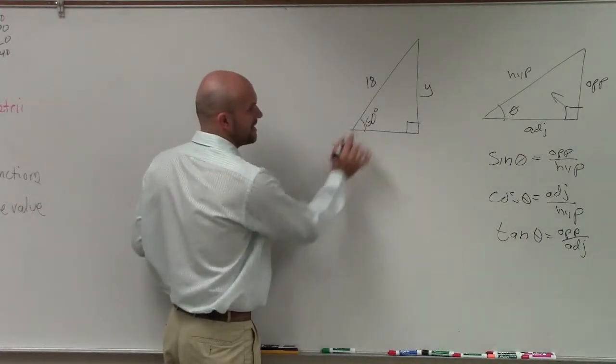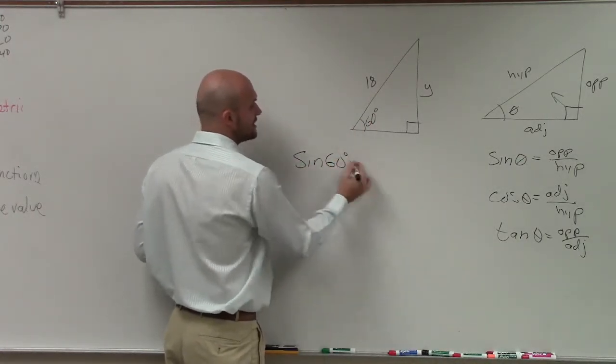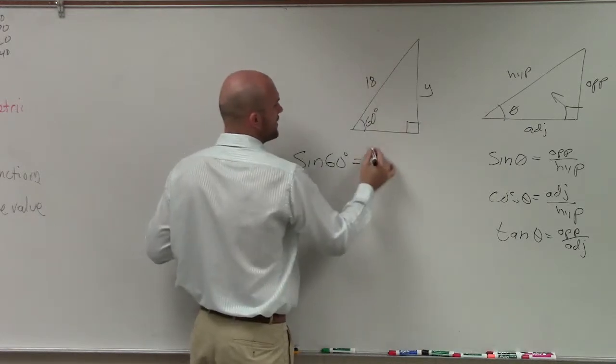So let's write this. The sine of 60 degrees equals opposite over hypotenuse.